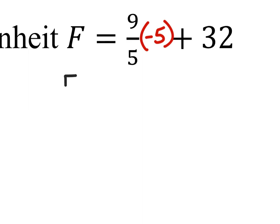And what do we get after we multiply the fraction? We can make that a fraction if we need to. That would be Fahrenheit equals negative 45 over five.